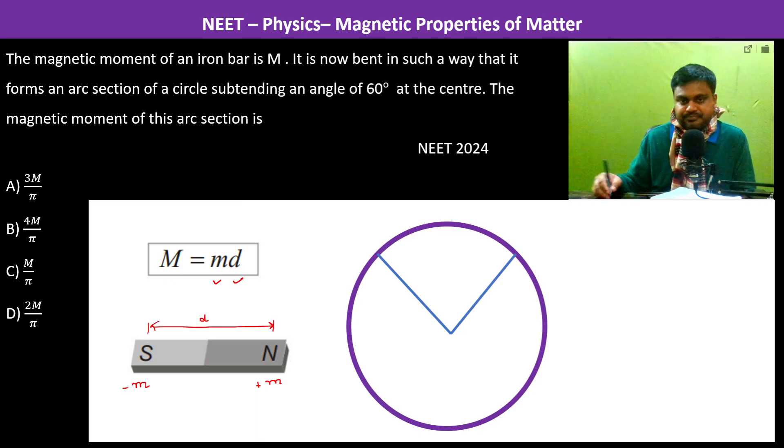Initially the length was l, so therefore the magnetic moment was m into l. Now it is bent in the form of an arc which is subtending an angle 60 degrees here. So now the south pole has come here and the north pole has come here, so therefore the length is going to be now this.